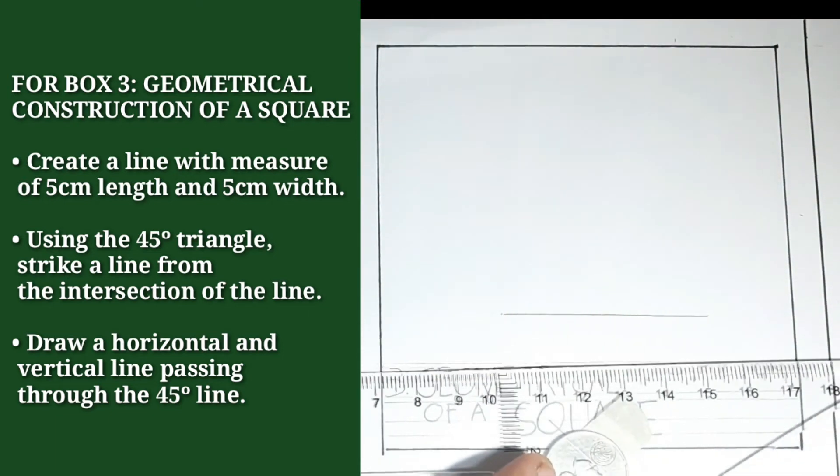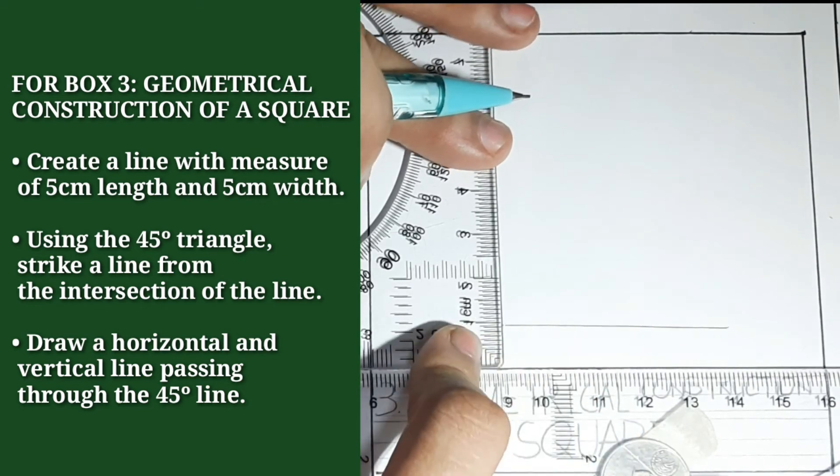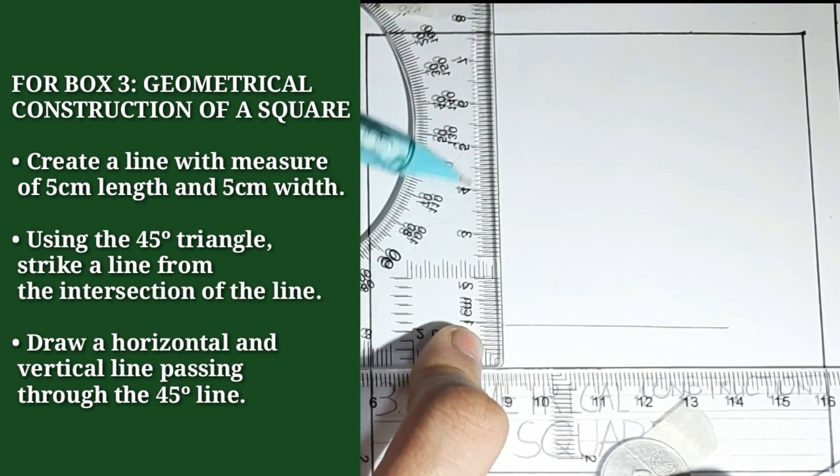And then, we will create a vertical line with a measure of 5cm: 1, 2, 3, 4, 5.